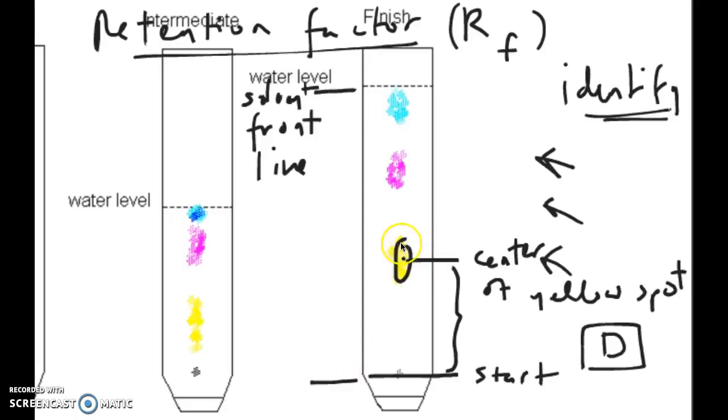Let's say I want to calculate the RF for this yellow spot. What I would do is I would measure from the starting point—the starting point is where I originally put the sample. I'm going to measure from the starting point to the center of that spot. You see that I circle it, and I put a dot right at the center. I'm going to measure that distance. That I will call D, and then I'm going to measure another distance, which is the starting point all the way to where the water or the solvent ends. That's called the solvent front line, which has the symbol F. If I take D divided by F, I get my RF.